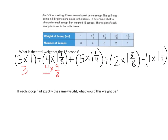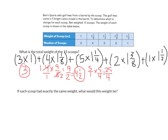Remember, a whole number can be written as a fraction over 1. We simplify 4/1 × 9/8 by dividing both 4 and 8 by 4: that gives 1 × 9/2 = 9/2, which we rewrite as 4½. Next, for 5 × 1¼, we convert 1¼ to 5/4, giving 5/1 × 5/4 = 25/4, which simplifies to 6¼.